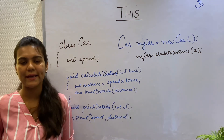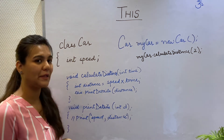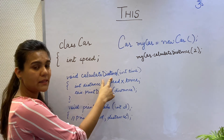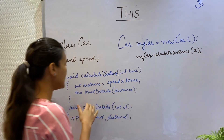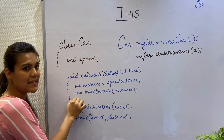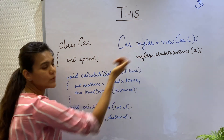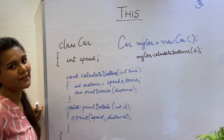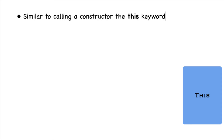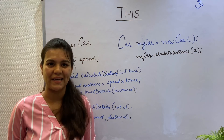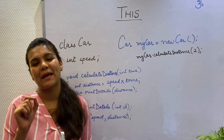Similar to constructors, we can also call methods using the this keyword. I have the same car class with a calculateDistance method and a printDetails method. I am calling the calculateDistance method from the car object, and internally I am calling the printDetails method using the this keyword. The this keyword is actually the myCar object, so internally this gets replaced with myCar, and then the printDetails method is called. This means we can internally call methods inside other methods of the same class without calling them explicitly.